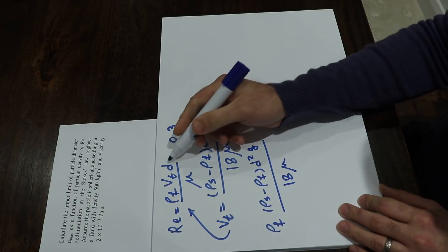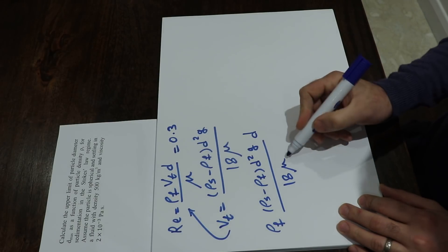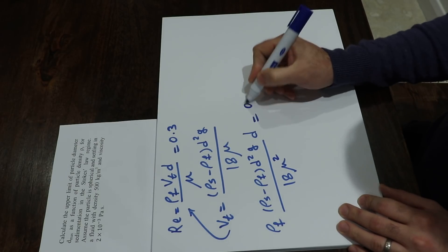Times d divided by μ, which times 18μ will be μ squared, should be equal to 0.3.